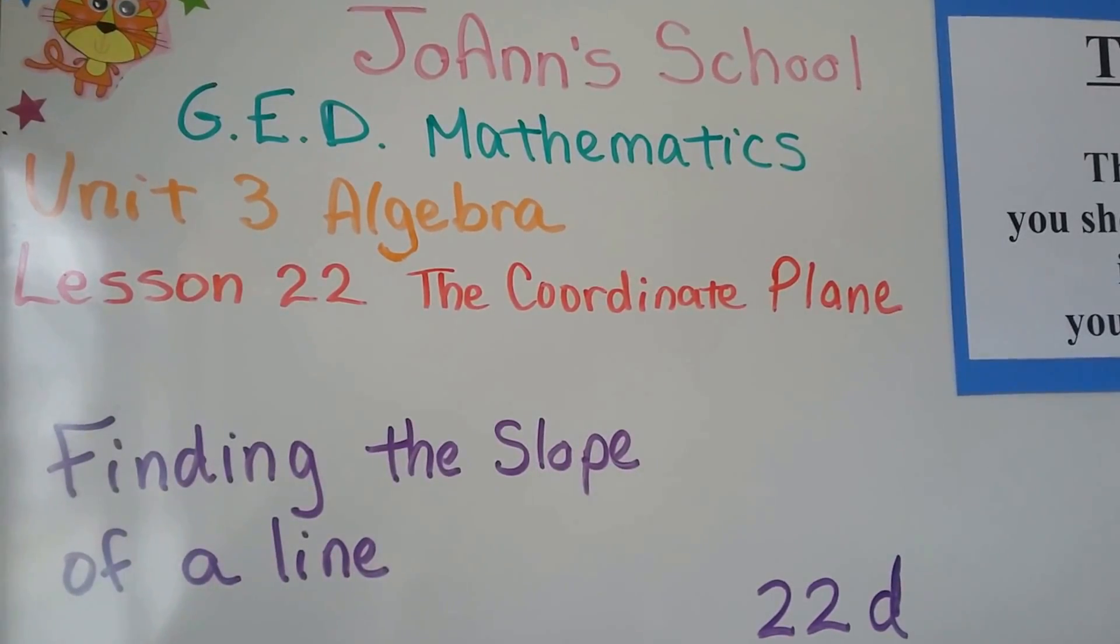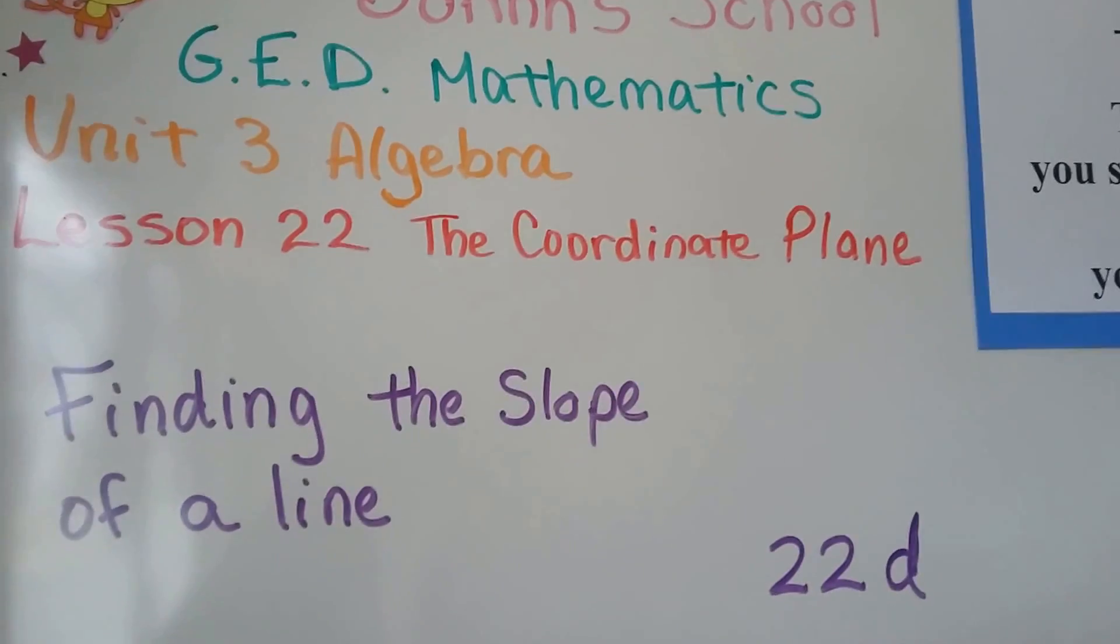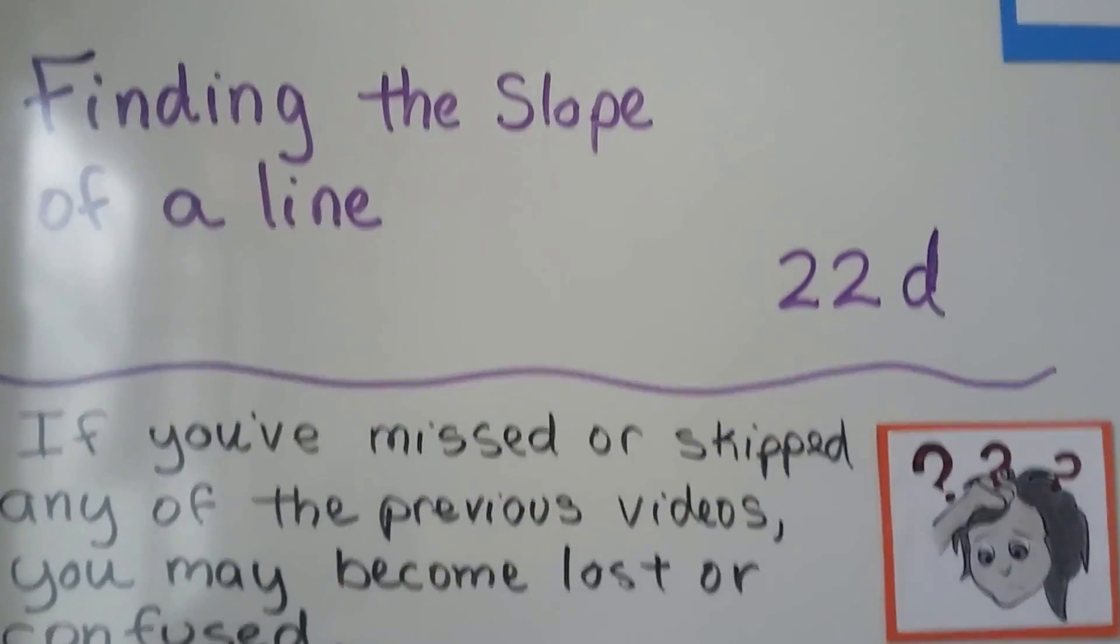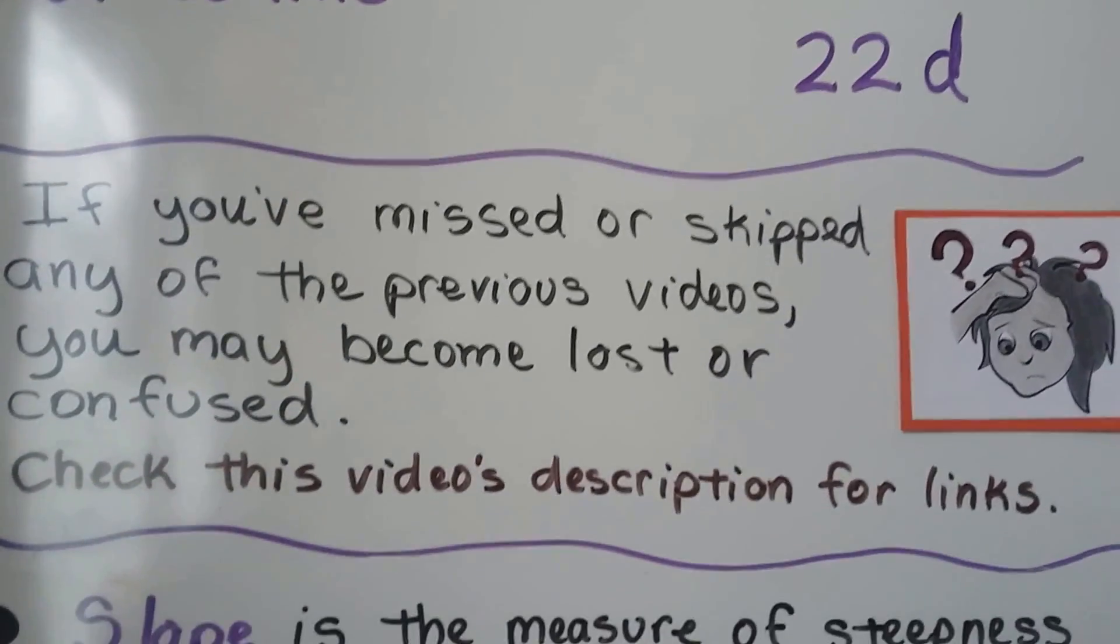There's a couple different ways to find the slope of a line. This is lesson 22d, and of course I've got links to 22a, b, and c in the description.